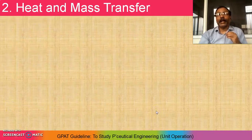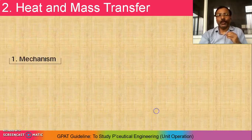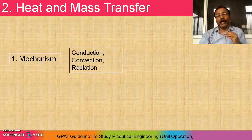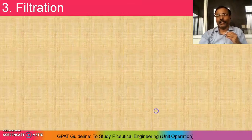Next, heat and mass transfer. How to study this chapter? Just check out the mechanism. There are three mechanisms involved in heat and mass transfer: conduction, convection, and radiation. So you have to check out each mechanism.